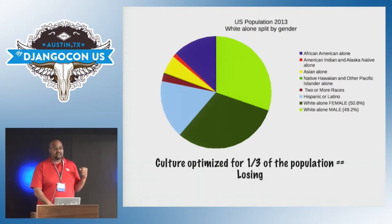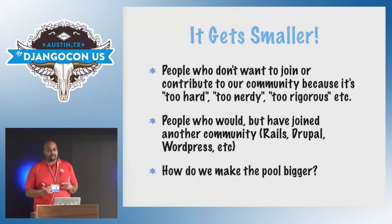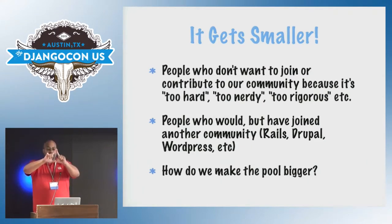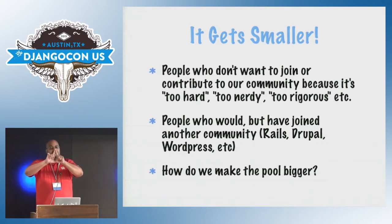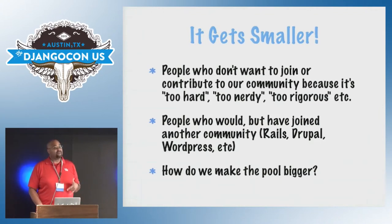But it actually gets worse. We take this small one-third slice and it gets smaller still. Of that slice, a certain percentage of people won't join a technical project because it seems too difficult. Then people who might have joined choose Rails or PHP instead. So now you have an even smaller pool of potential contributors, because people who contribute to Django or the Python community need to actually be members of that community. So how do we take that shrinking slice and make it bigger?